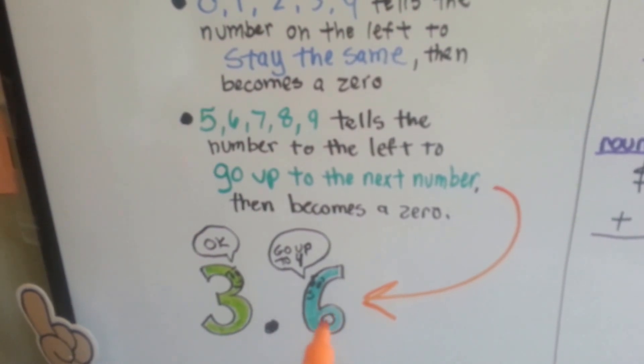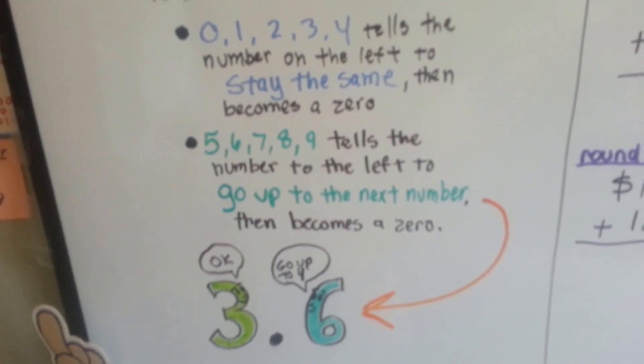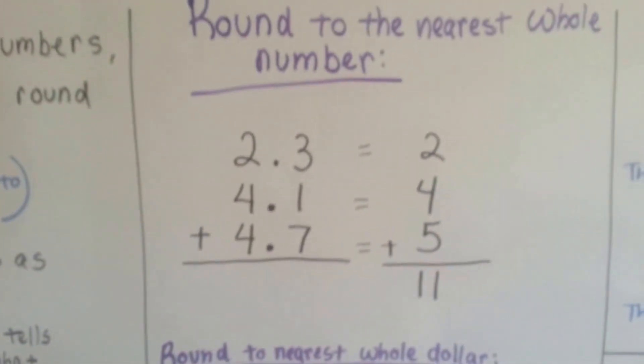So the 6 is on the right-hand side. It tells the 3 on the left side to go up to 4. So we can round to the nearest whole number.